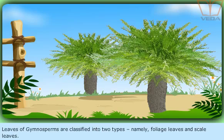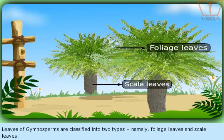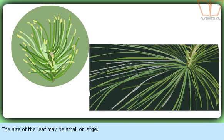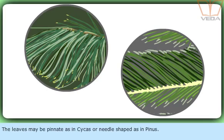Leaves of gymnosperms are classified into two types, namely foliage leaves and scale leaves. The size of the leaf may be small or large. The leaves may be pinnate as in Cycas or needle-shaped as in Pinus.